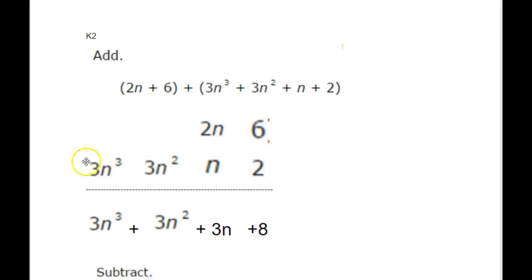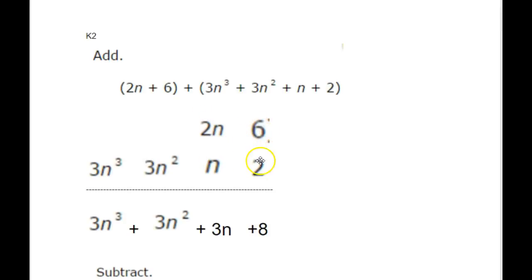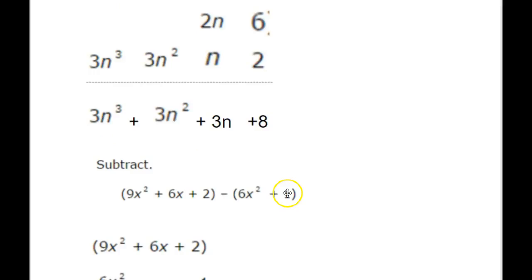The n squared and n cubed terms don't appear in the first polynomial, so I've left blank spaces underneath them — just like when we add numbers of different sizes. We're lining up the polynomials by the degree of the variable. Then when we add them up, we just go through each vertical column and add up everything in that column. Pretty easy.